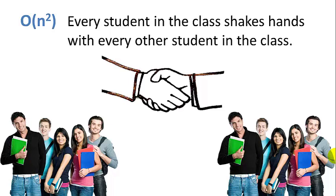Every student in the class shakes hands with every other student in the class. Well there are n students in the class, so there are going to be roughly n squared handshakes. So this is big O of n squared.